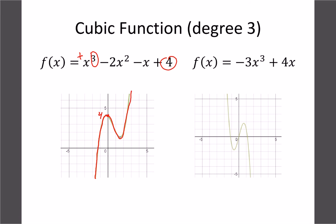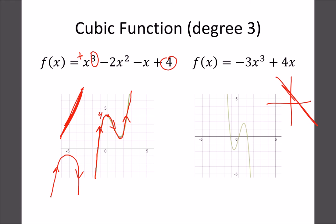The key thing with degree: degree one is just one direction; degree two has a curve so we change direction once; degree three gives us three different directions — up, turn down, turn up again. Just like with linear, a positive cubic goes from quadrant three up to quadrant one, and a negative cubic starts in quadrant two and ends in quadrant four. Degree three means three turns.